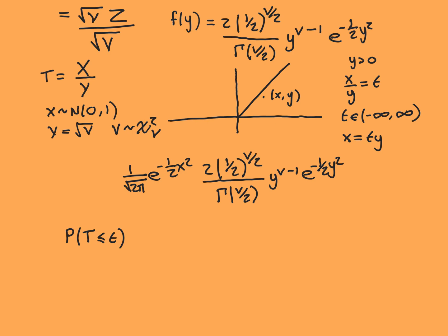Welcome back. We're now going to work out what the CDF for our random variable big T is going to be. We want to find the probability that big T is less than or equal to some value little t. The range space of our random variable big T is negative infinity to infinity, so this probability means the probability that big T is between negative infinity and little t.